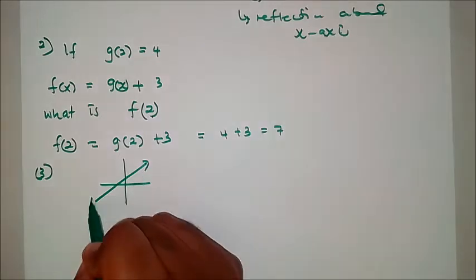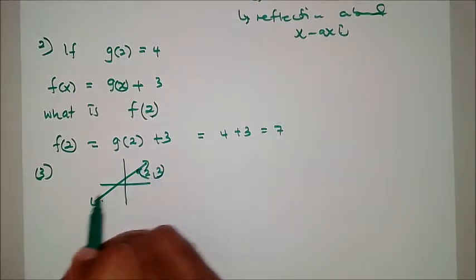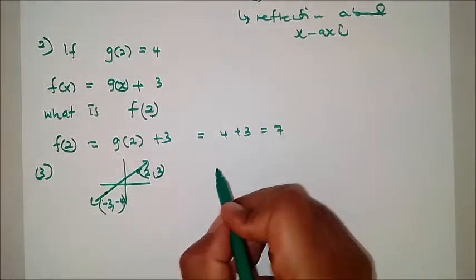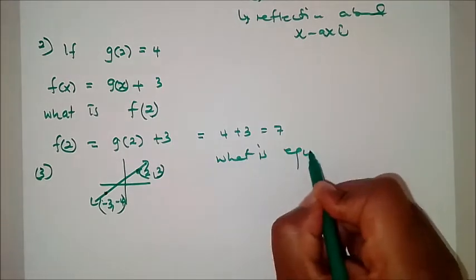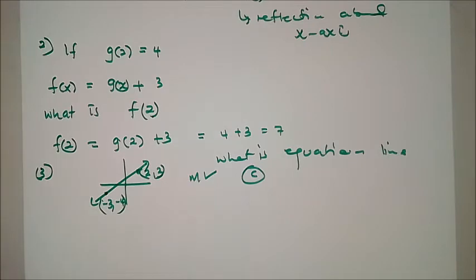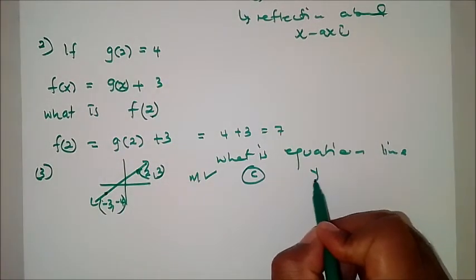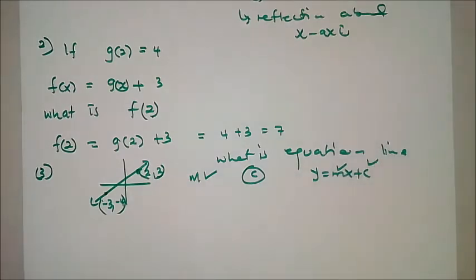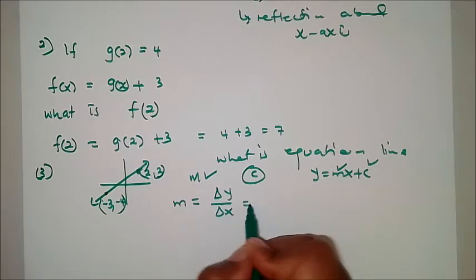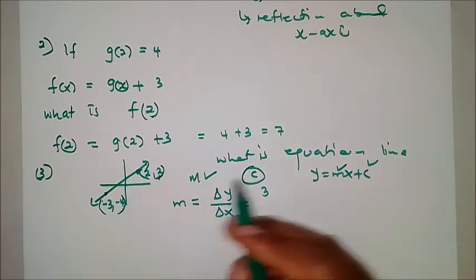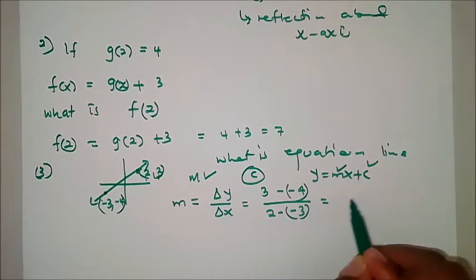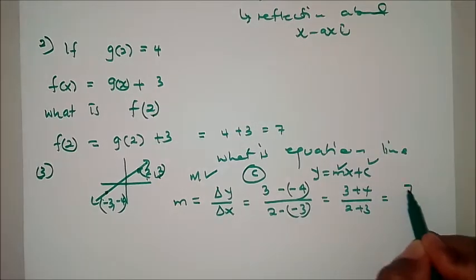Next, say you have a line passing through (2, 3) and (-3, -4) and they ask for the equation of the line. You need the gradient and the y-intercept, using y = mx + c. The gradient is (y2 - y1)/(x2 - x1) = (3 - (-4)) / (2 - (-3)) = 7/5.